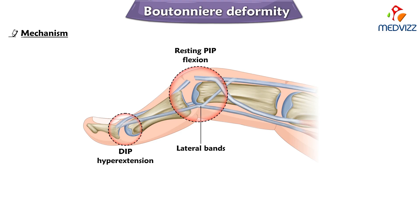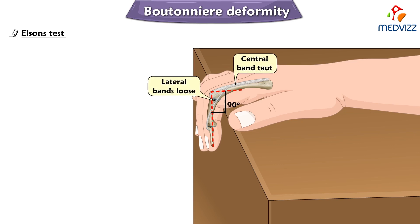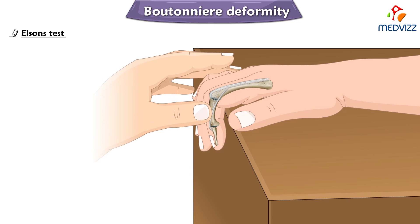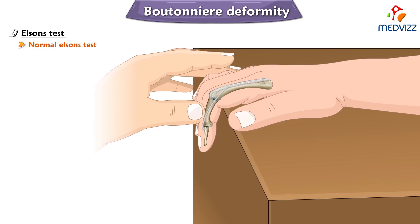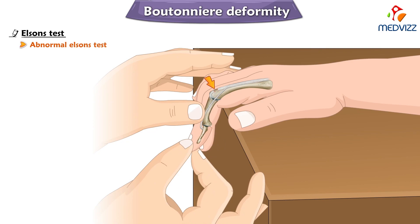It is also very important to know about the Elson's test. To perform the Elson's test, position the patient's proximal interphalangeal joint in 90 degrees of flexion. This normally keeps the central bands taut and the lateral bands loose. Ask the patient to extend the proximal interphalangeal joint while the provider's finger applies counterforce at the middle phalanx. In a normal Elson's test, there is active extension of the proximal interphalangeal joint and a floppy distal interphalangeal joint. In an abnormal Elson's test, there is no active extension of the proximal interphalangeal joint and a slightly extended distal interphalangeal joint.